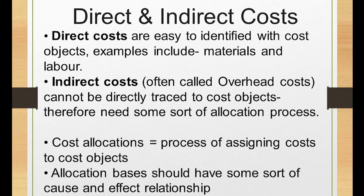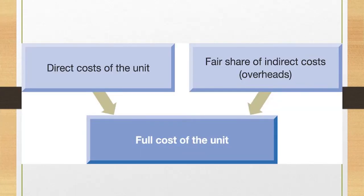The other concept is apportionment. Costs which are related to more than one product or more than one department need to be apportioned — that is the process we will see today. Direct costs are easy and go directly onto the cost card, then a fair share of indirect costs needs to go to the unit. The word 'fair share' is subjective; every manager tries to get as little cost allocated to their department as possible.